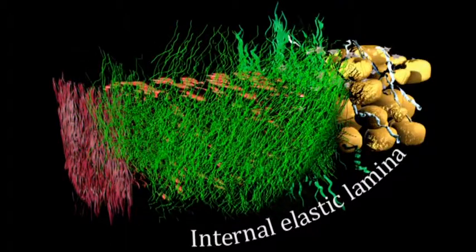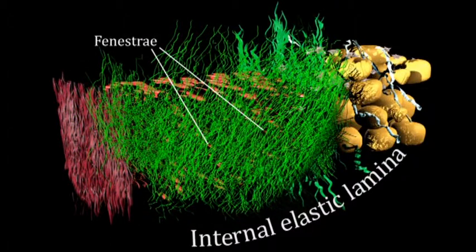The internal elastic lamina is a flexible barrier that separates the tunica intima from the tunica media. The two layers can still communicate through small holes in the lamina, called fenestrae.